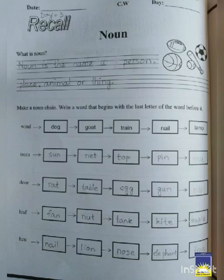Noun. Now below there is an exercise to do which is really interesting. Make a noun chain. Write a word that begins with the last letter of the word before it.